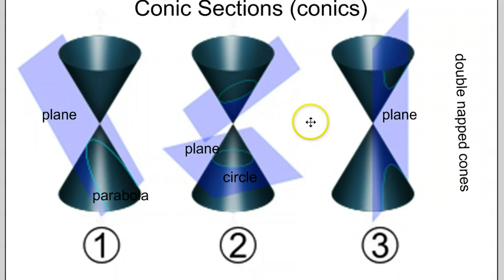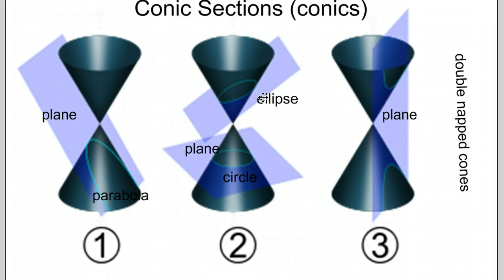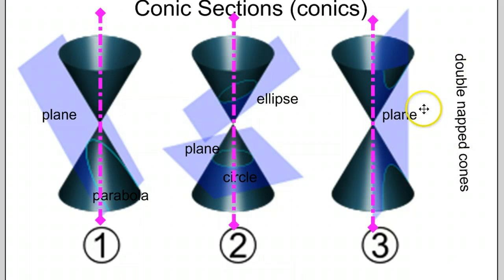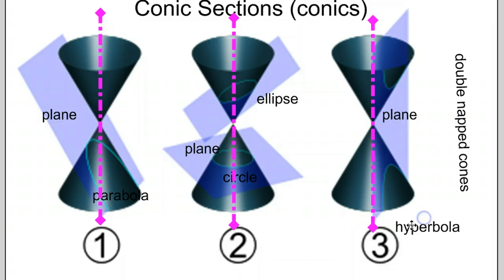But if you intersect the plane so that it intersects in this way up here in the top cone, we have what's called an ellipse or an oval. And if you have the plane intersect in such a way where it's perpendicular to the base or parallel to the axis of symmetry of the double-naped cones, you have what's called a hyperbola. And this starts the topic of conic sections, or conics for short.